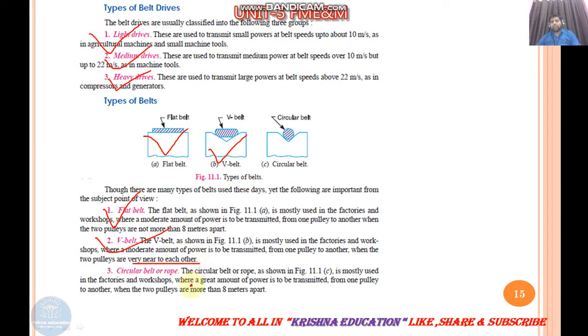Circular belt or rope is sometimes used. You must know, like when machines go up and down, like in slab construction, the carry machine runs on wheels. That is circular belt or rope, mostly used in factories and work where large amount of power needs to be transmitted from one pulley to another. Where distance between two pulleys is more than 8 meters, 10 meters or more, we use circular belt. This is called the belt type.